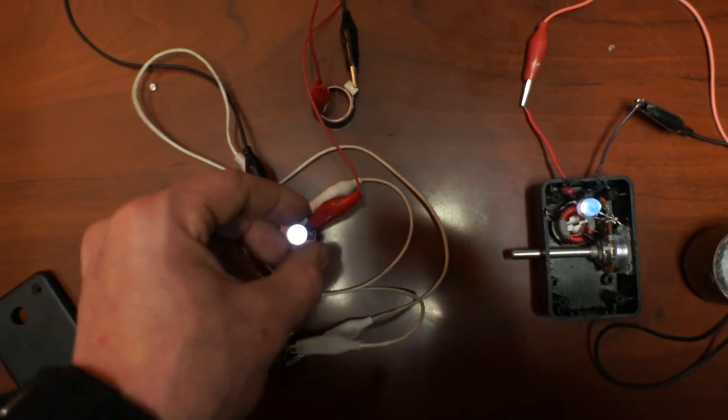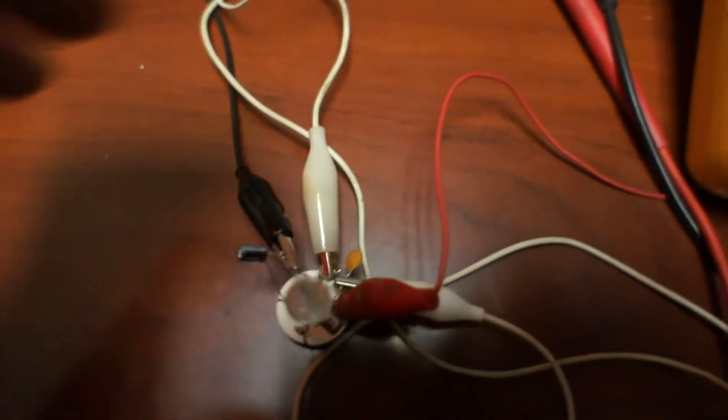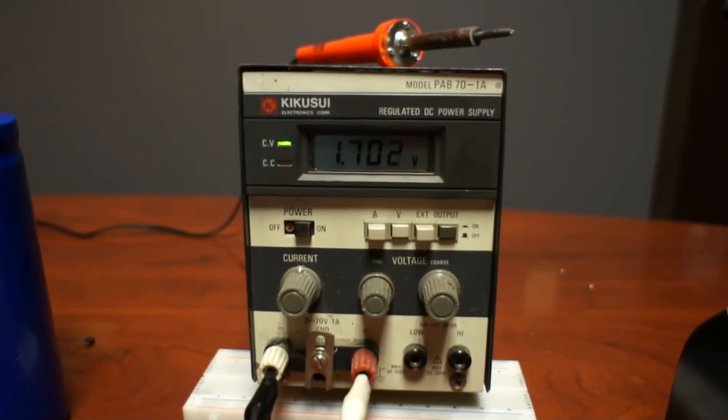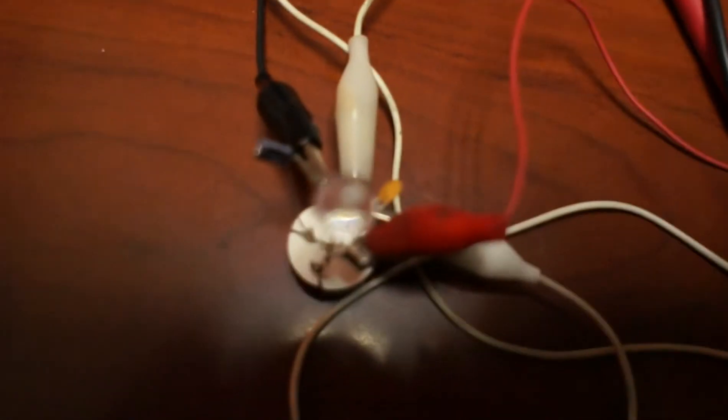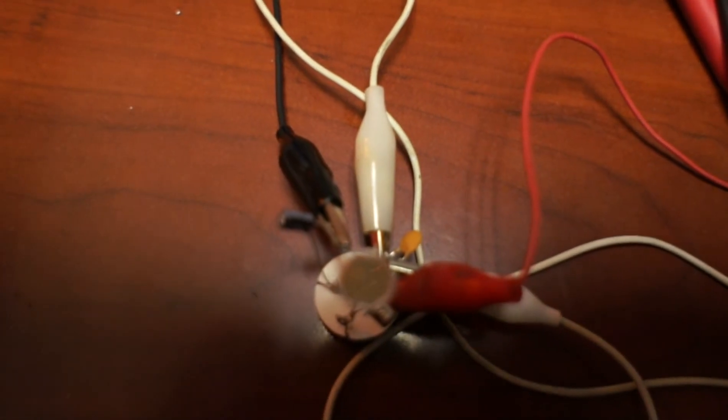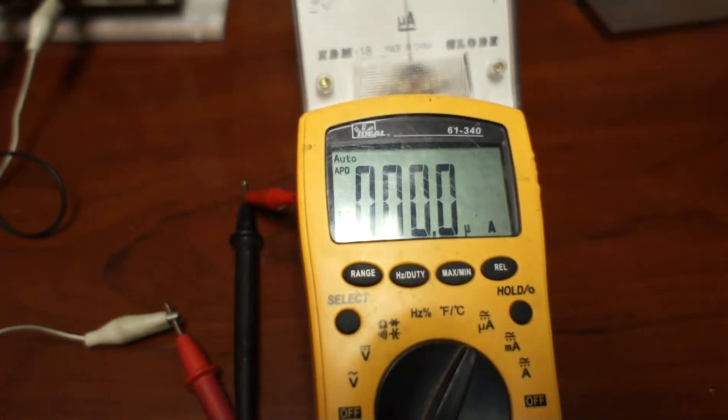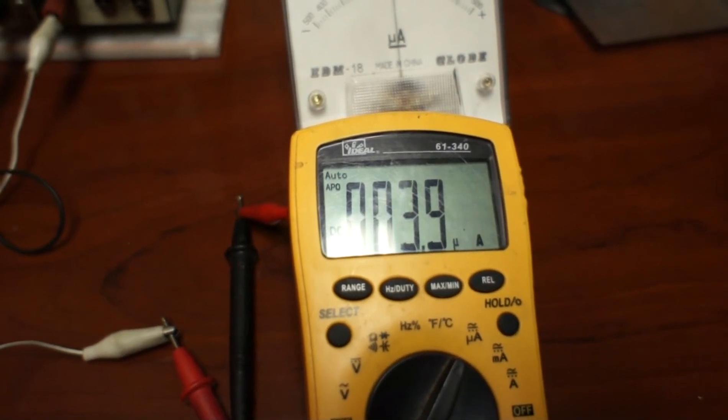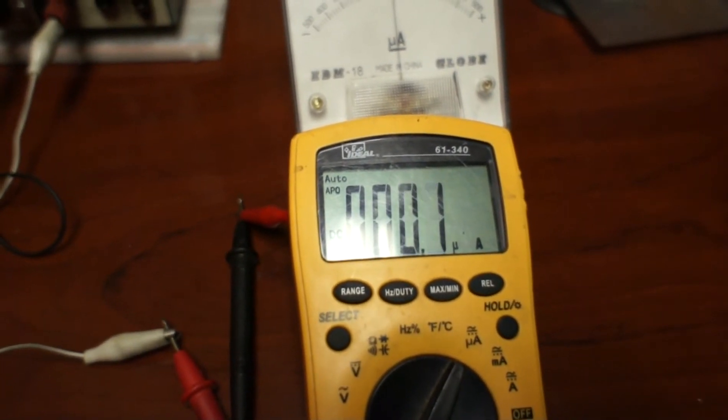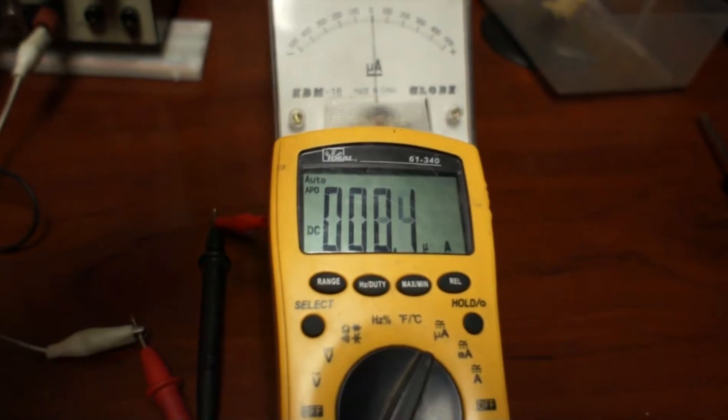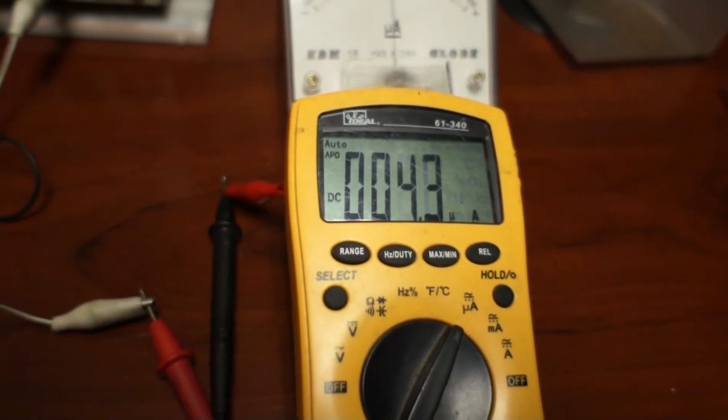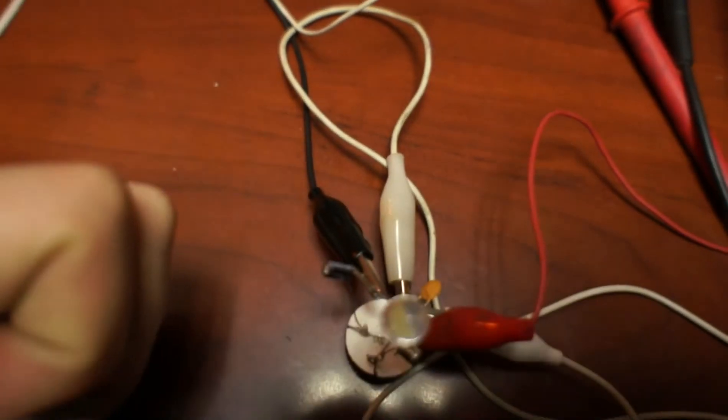I'm just going to show the power draw here on this little circuit when it's running. I've got my power supply set at 1.7 volts and you can see it blinking along here. I'm pulling between zero and three to four microamps.